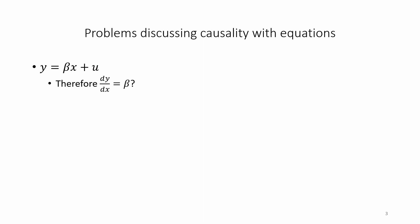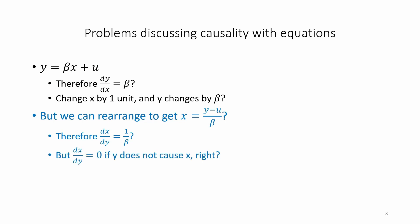If we want to see how x varies with y, we could think in terms of dy by dx equals beta. So, if we change x by one unit, then y changes by beta, right? But we can rearrange the equation to get x equals y minus u divided by beta. Therefore, dx by dy equals 1 divided by beta.